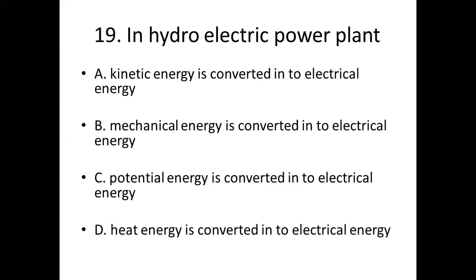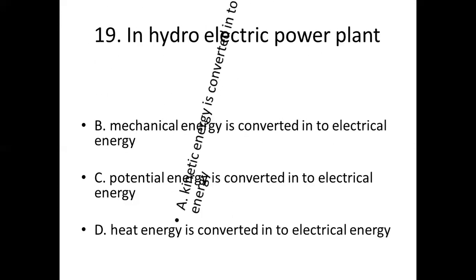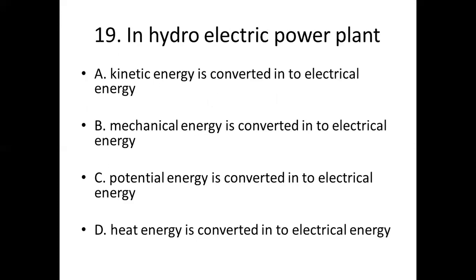Nineteenth bit. In a hydroelectric power plant: Option A, kinetic energy is converted into electrical energy. Option B, mechanical energy is converted into electrical energy. Option C, potential energy is converted into electrical energy. Option D, heat energy is converted into electrical energy. Answer: Option A, kinetic energy is converted into electrical energy.